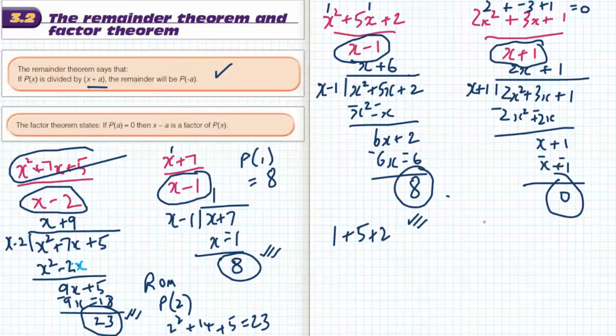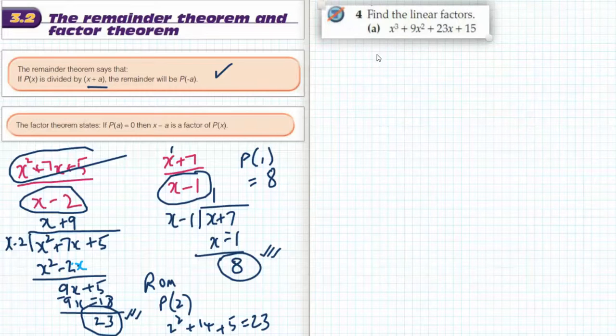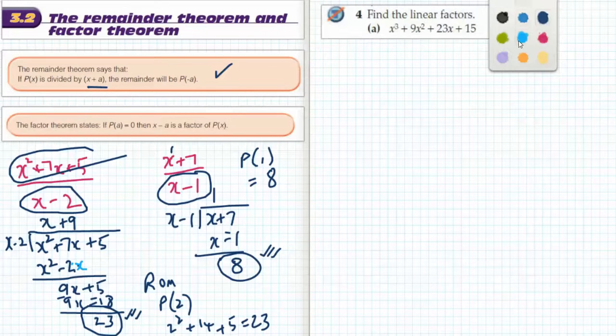Okay, how might that be useful? Would it be useful if I'm trying to factorise something? If I'm trying to factorise a cubic or a quartic. Question 4a out of 3.2 asks to find the linear factors of this cubic. Now I can't find linear factors using any of the quadratic rules because that's to do with quadratics. I need to use both the remainder theorem and the factor theorem to come up with a factor.